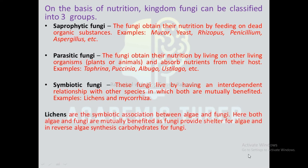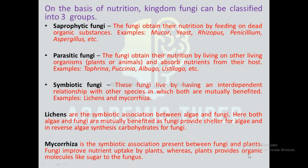Lichens are the symbiotic association between algae and fungi. Both algae and fungi are mutually benefited — fungi provide shelter for algae and in return, algae synthesize carbohydrates for fungi. Mycorrhizae is the symbiotic association present between fungi and plants. Fungi improve nutrients obtained by plants, whereas plants provide molecules like sugar to the fungus.